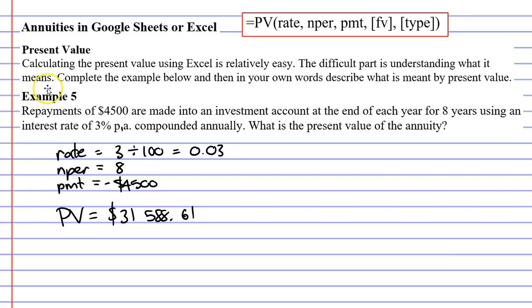We've actually solved example 5, but it's really important to understand what this means. Whenever we start with a present value, we know there's also going to be some sort of a future value. Our present value is $31,588.61 — notice that this is a positive amount. So what is our future value here?